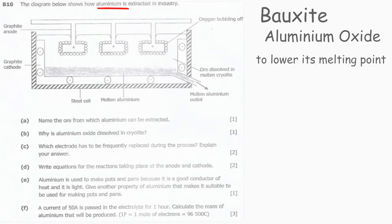Question C: Which electrode has to be frequently replaced during the process? Explain the answer. We need to give a reason for the answer. The anode has to be frequently replaced.